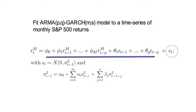Now, sigma square t minus 1 follows that GARCH(m,s) parametrization.